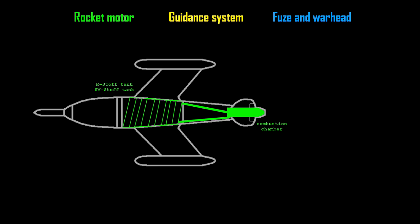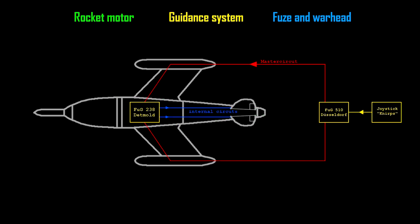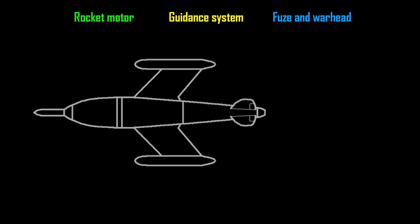Main components of an air-to-air missile are the rocket motor, its guidance system, the warhead and its fuses. In the X4, those were the BMW 109 548 rocket engine with its hypergolic fuels S-Stoff and R-Stoff. The guidance system used a joystick named Knirps which manipulated polarity and current in the master circuit between Düsseldorf and Detmold device to assign the commands to the missile. A pair of relays in the Detmold device decoded them and operated the solenoids on the control surfaces. A gyroscope was used to give the missile a sense of up and down.